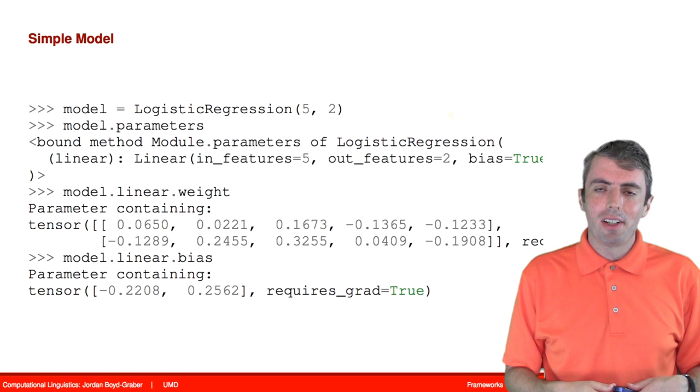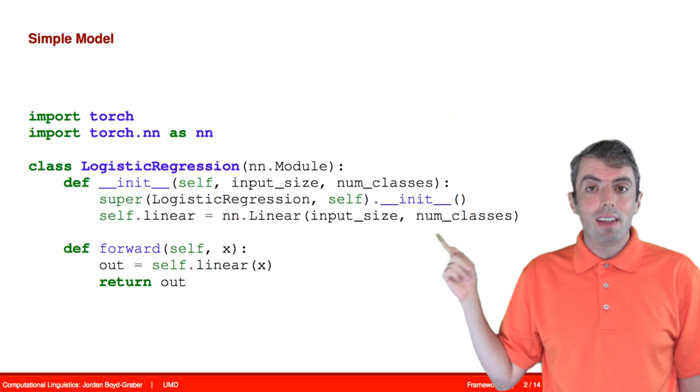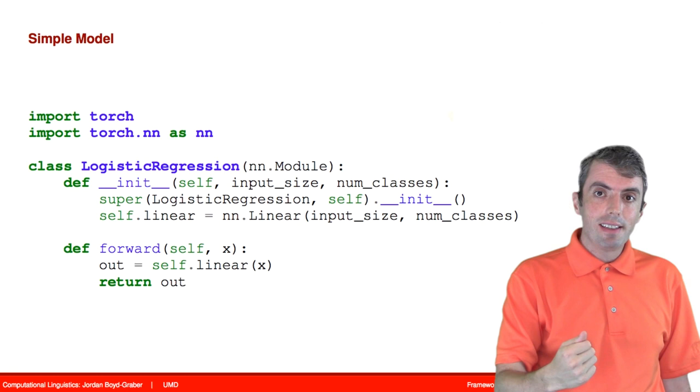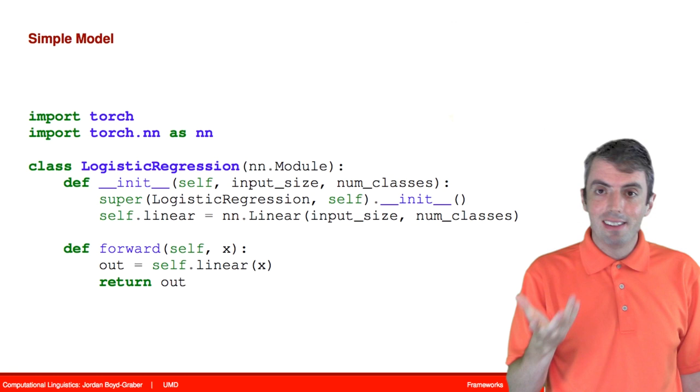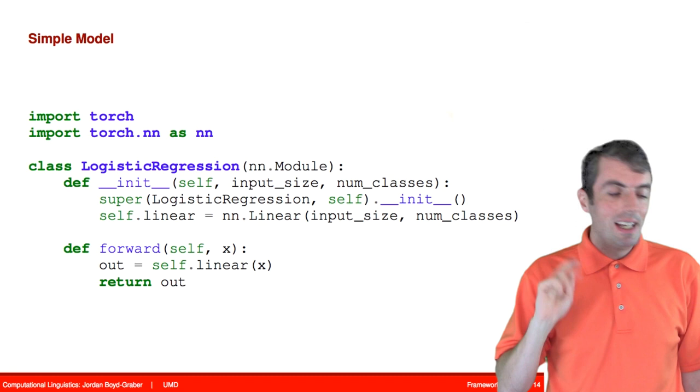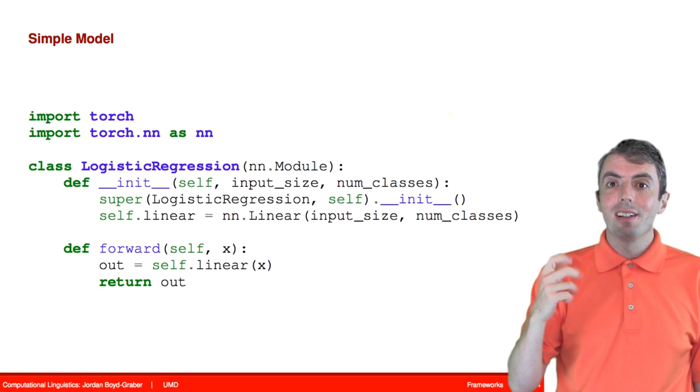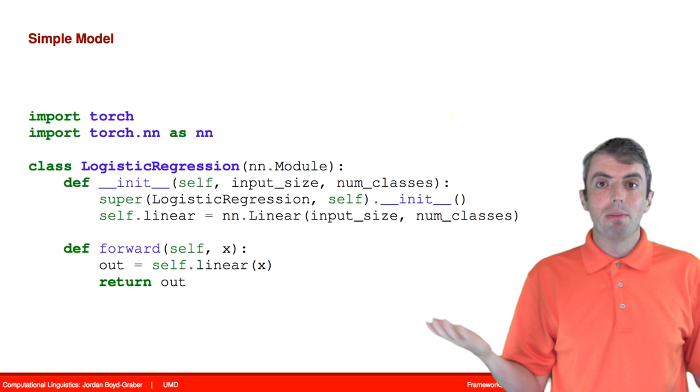So let's go back to our code and see what's going on there. So what happened is that we created a new member of this class. We created a member called linear, and it is a module. So it is a linear function, and once you add any member to a class, anything that is a subclass of a module will keep track of all the things that you've added as members and list them as parameters. So that's how it knows implicitly that linear is a parameter of this function.